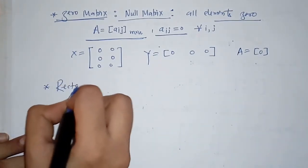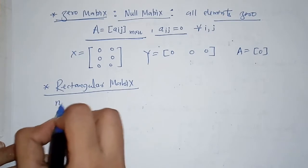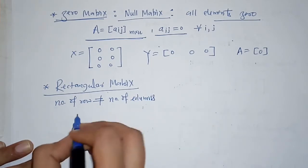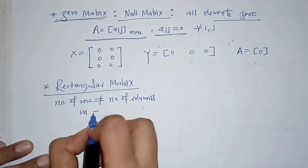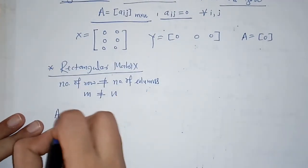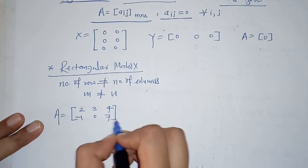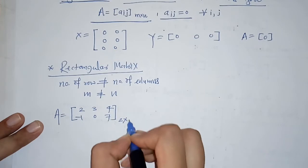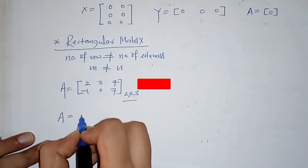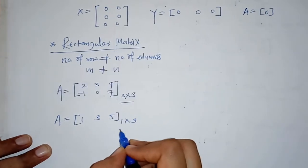Now next we have rectangular matrix. A rectangular matrix is one in which the number of rows is not equal to the number of columns — that means m is not equal to n. For example, a matrix with 2 rows and 3 columns is a rectangular matrix of order 2 by 3. Another example with 1 row and 3 columns is also a rectangular matrix.